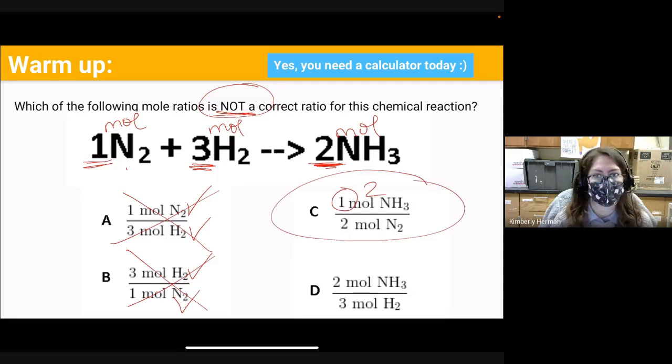But don't forget to double check letter D. Do we have 2 moles of NH₃? Yes. And do we have 3 moles of H₂? Yes. So for this one, we were looking for the ratio that was not correct as per our mole ratios from our given coefficients. So hopefully this helped.